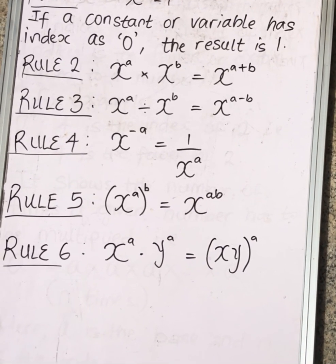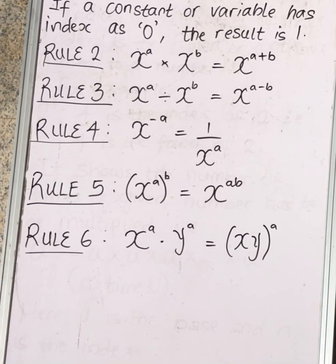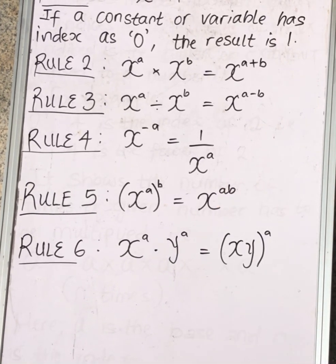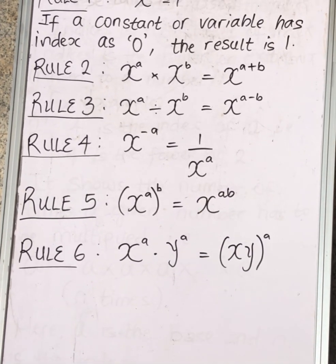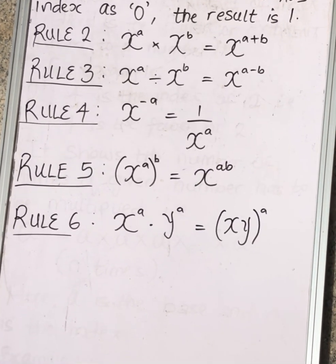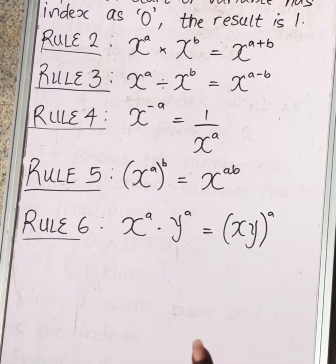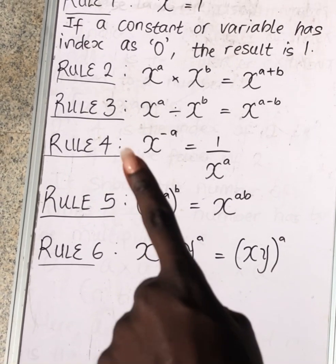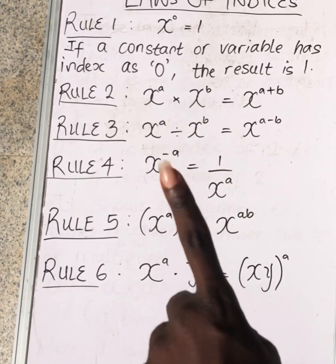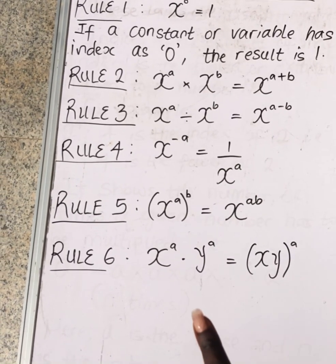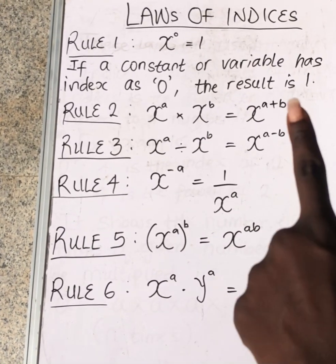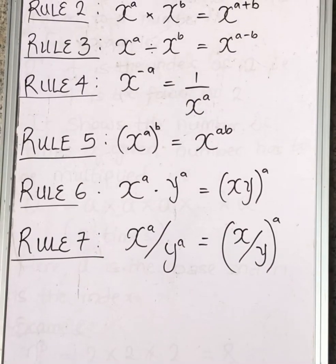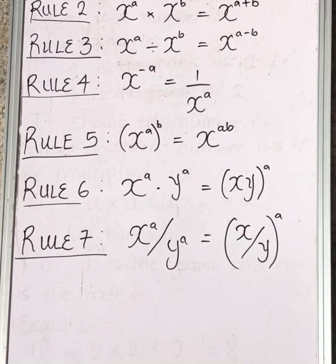To be clear: rule number two is multiplying two same bases with different powers, but rule number six is multiplying two different bases with the same power. These are two opposite things — do not be confused.